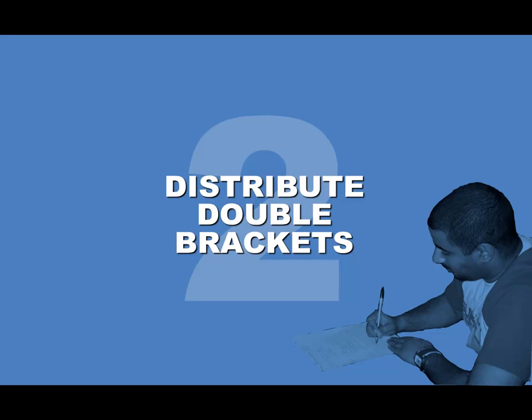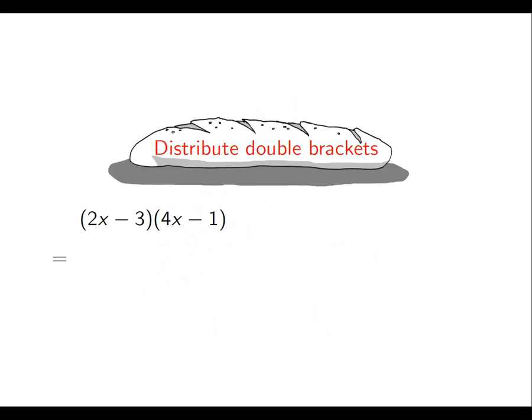The second item in our Baker's Dozen for this screencast is how to handle situations where you have double brackets. So for example, here we have 2x minus 3, so we have two terms in brackets being multiplied by two other terms, 4x minus 1. Now the important thing, as you probably know, is that each of the two terms in the first bracket need to be multiplied by both terms in the second bracket.